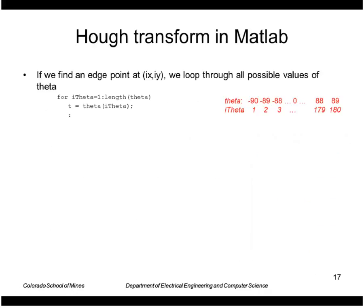We would write the code like this. If we find an edge point in the edge image at this location, we loop through all possible values of theta. Remember, theta is an array containing the angles. We get the actual theta in degrees using this t here. Then for each value of t, we compute the value of rho corresponding to that x, y, and theta.